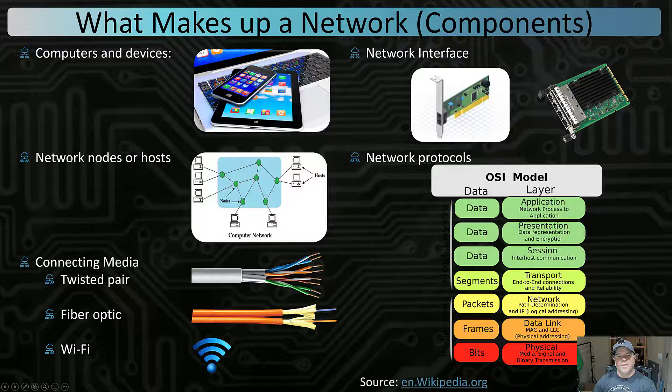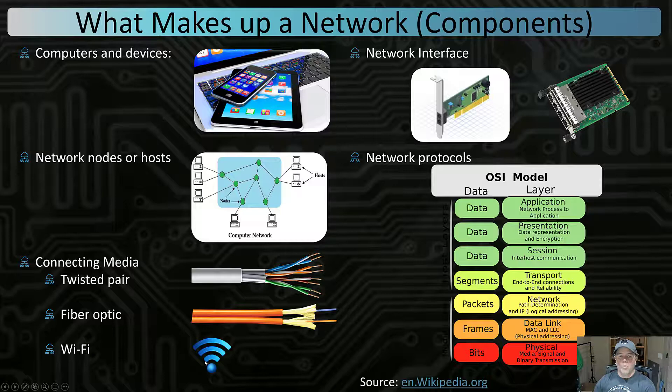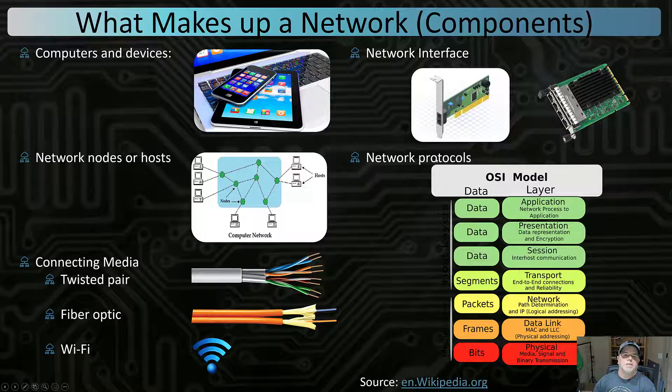Twisted pair can only run for 100 meters. Fiber optic can do 1,000 meters generally, which means sometimes even in businesses we have to use fiber optic to connect certain portions of the network. Today, Wi-Fi is pretty common for connecting devices and computers wirelessly, making it easy to travel with our device, take our laptop into a meeting room, back into our office, et cetera.